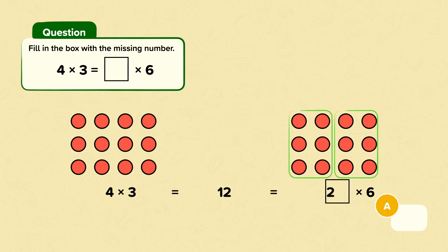So two times six equals twelve. Our missing number is two.